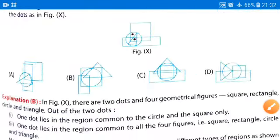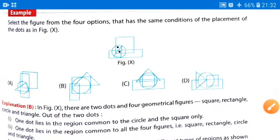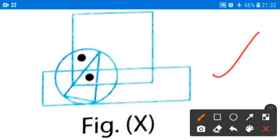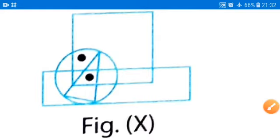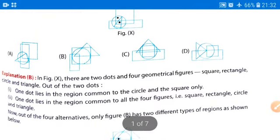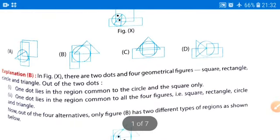So in this way we have to solve the questions. First we have to find out the location of the dot as we have found in figure X, and we have to find the similar position in the given four options. So in this way we have to solve the question. In the next video we are going to solve questions regarding this chapter. Thank you.